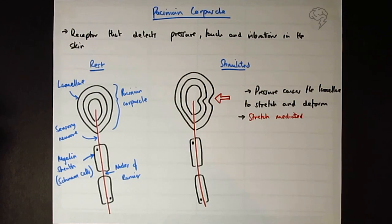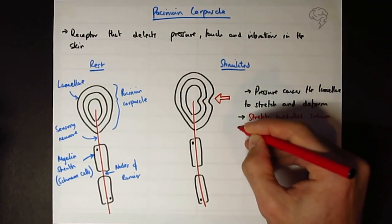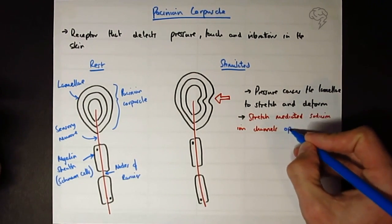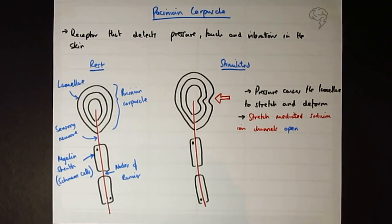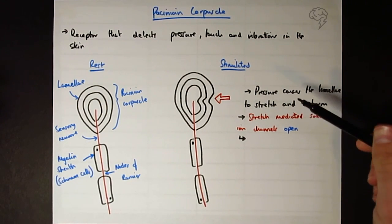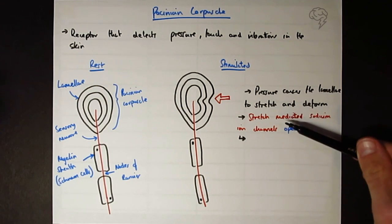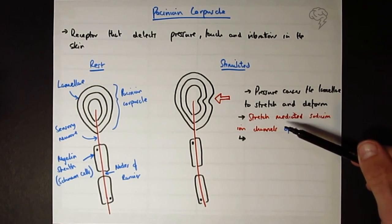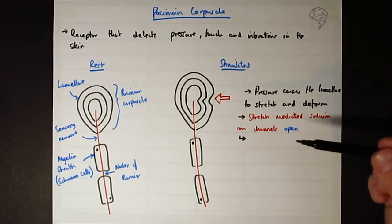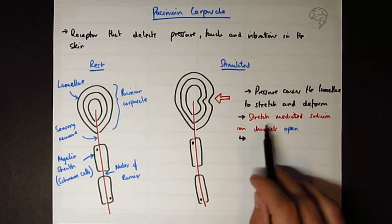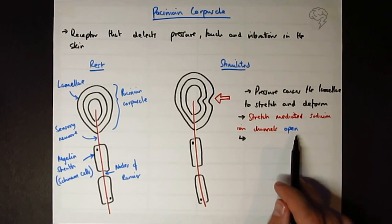So stretch-mediated controlled by stretching. I'm going to give you an idea of what they're always looking for with these types of questions. They want to know, first of all, what causes the change? Second of all, which channels open or close? Third of all, they want to know which ions are moving and how they're moving. So generally, it's going to be diffusion, and which direction are they moving in? First of all, we've got the cause, we've got the pressure. We've got which channels, the stretch-mediated sodium ion channels open. That's what they want to know.